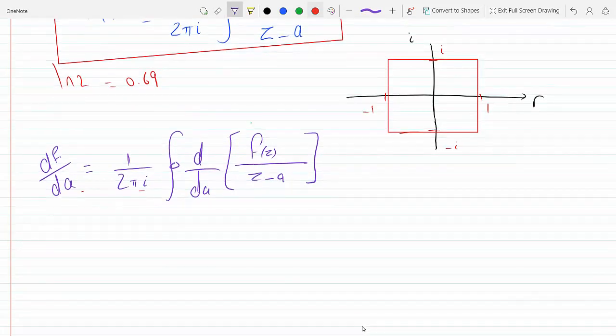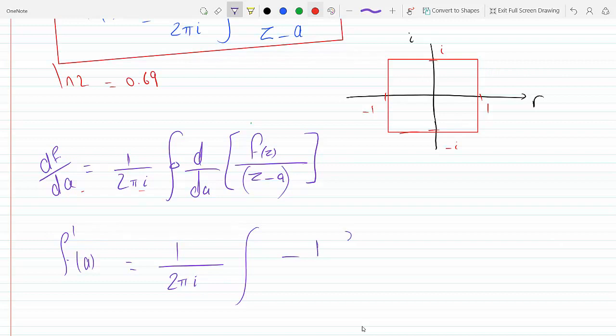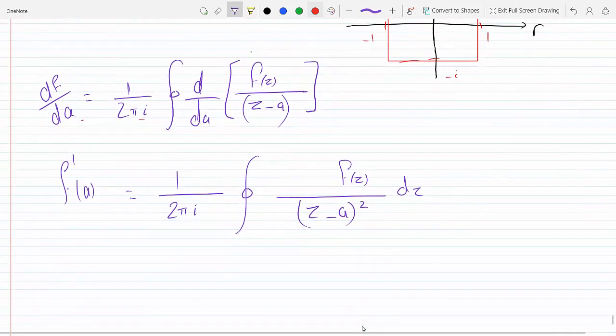F prime of A. Quotient rule on this inside guy will get you 0 minus 1, because the derivative is with respect to A. So you get minus 1 times F of z over z minus A squared. But you have a chain rule on minus A, that's minus 1, so this guy becomes plus 1 dz. So that's F prime of A.